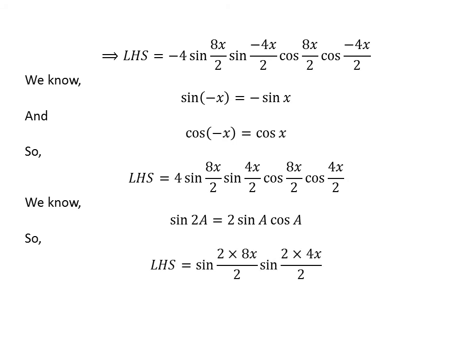Application of the above identity gives us the left hand side equal to sine of 2 times 8x/2 times sine of 2 times 4x/2. Cancelling out the common factor 2 in the numerator and denominator gives us sine of 8x times sine of 4x, which is equal to the right hand side of the given equation. So we have proved the given equation.